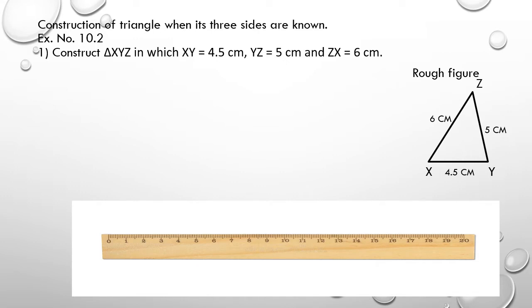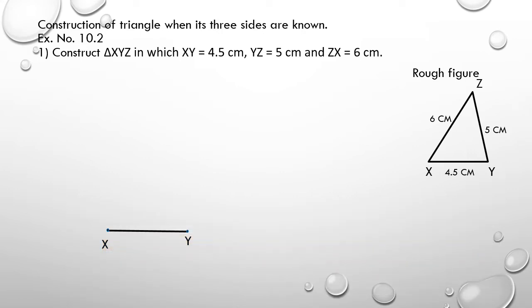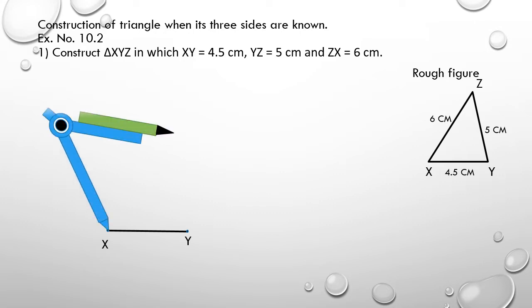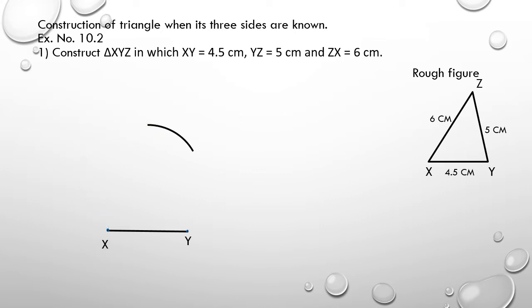To draw the fair figure, take a ruler, mark 4.5 centimeter, and draw a line segment — name it as XY. We know that YZ = 5 cm and XZ = 6 cm. Take your compass, measure 6 centimeter radius, keep it on point X, and draw an arc.